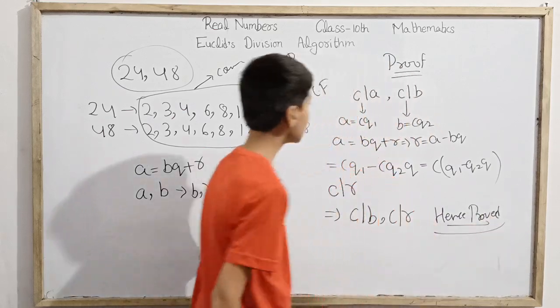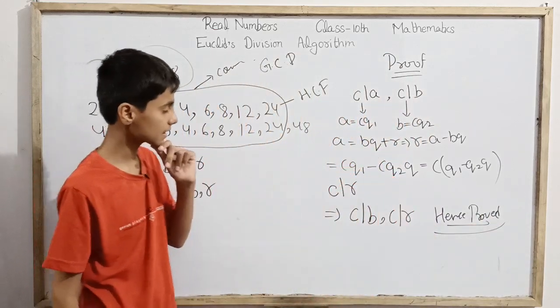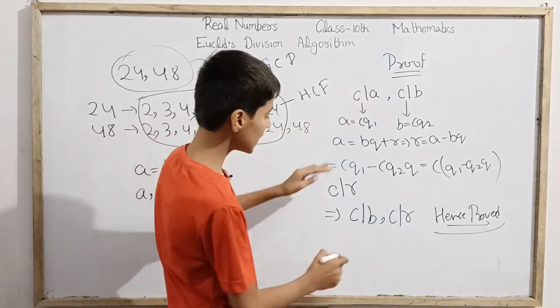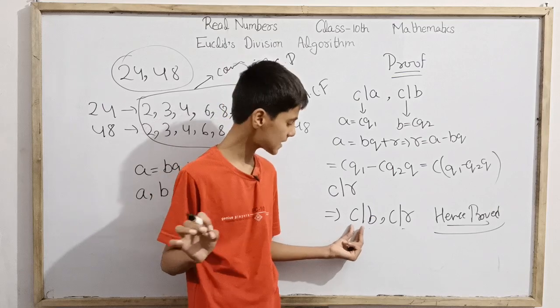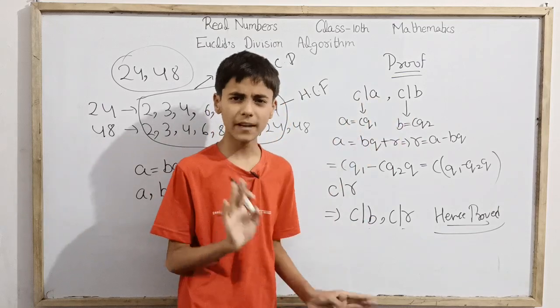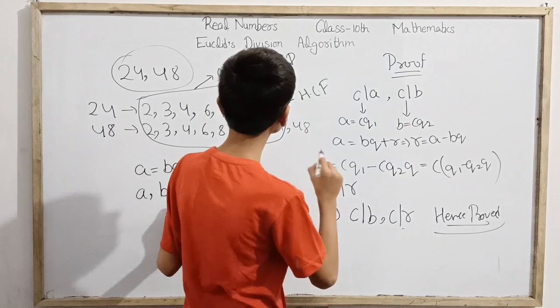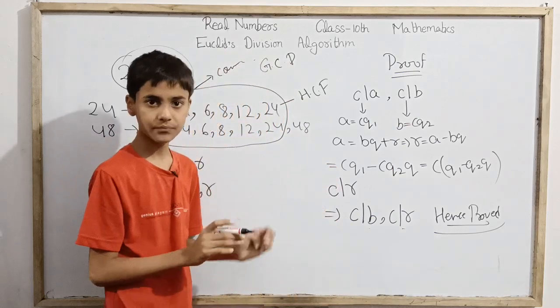Hence this theorem is proved. If you want, you can reverse the steps. If c is a common divisor of b and r, then it's also a common divisor of a and b.